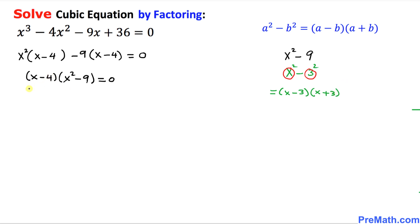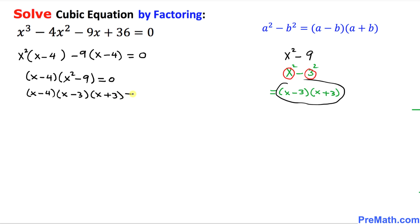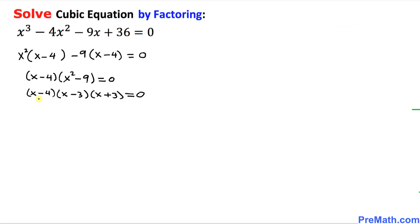Now let's move back to the left hand side. We have x minus 4 times x squared minus 9, and as we can see we have factored that out to x minus 4 times x minus 3 times x plus 3, which is equal to 0. We can see we have these three factors equal to 0 and we can separate them.